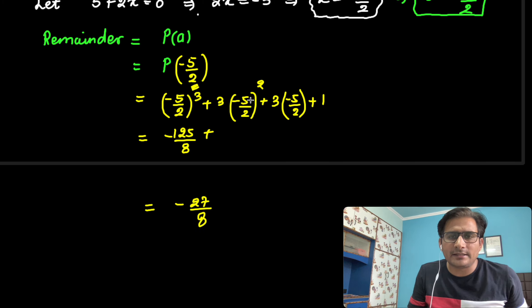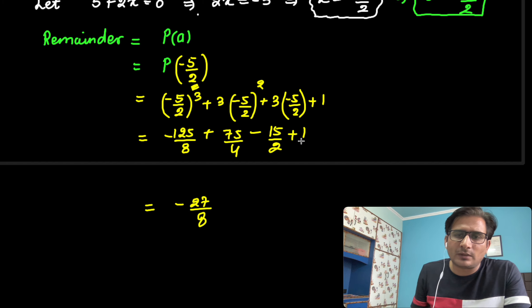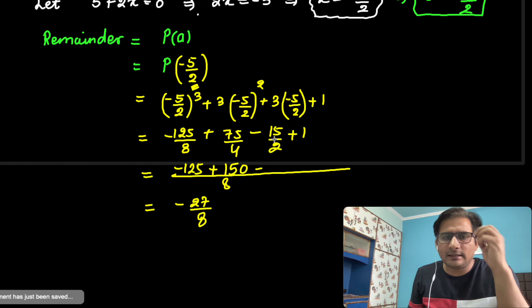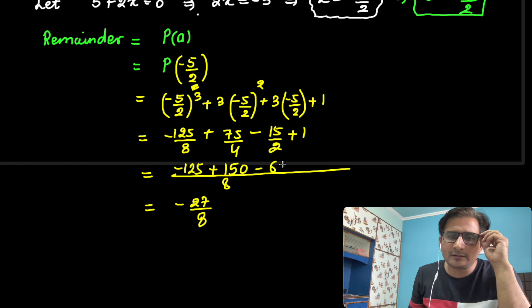Let me check it. It is minus 125 by 8. 3 times 25 is 75 by 4 minus 15 by 2 plus 1. If you take the LCM here, 8 is the LCM in this case. It is minus 125 as it is. 75 times 2 is 150. 15 times 4 is 60 plus 8.